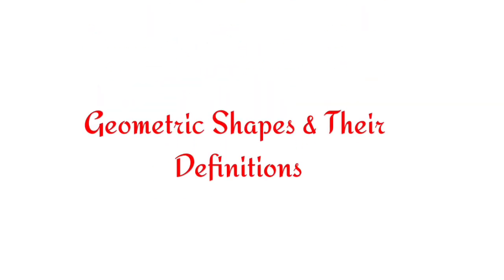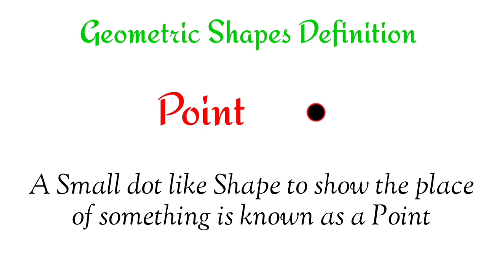Geometric shapes and their definitions. Points. A small dot-like shape to show the place of something is known as a point.